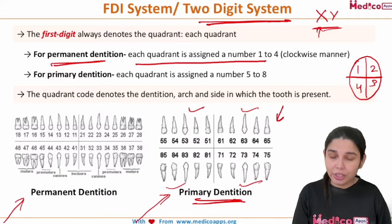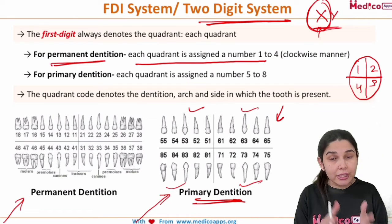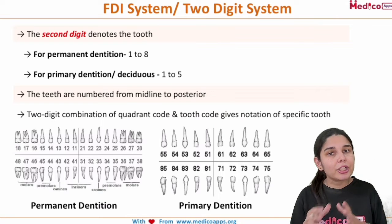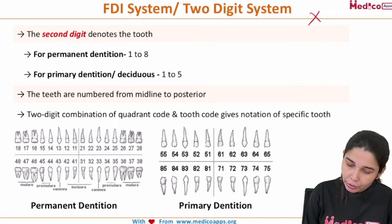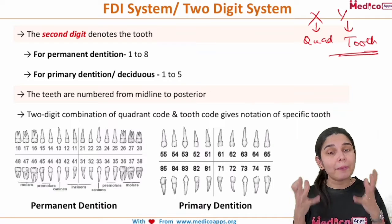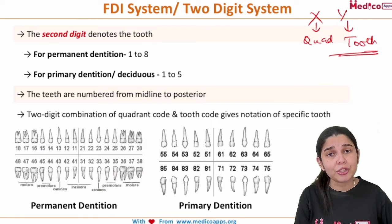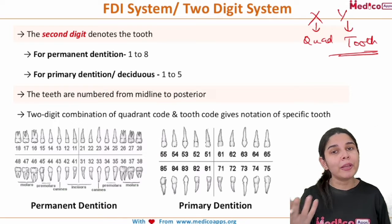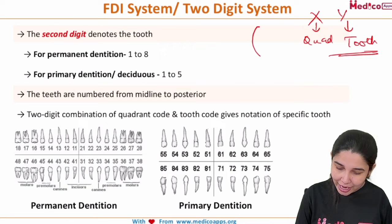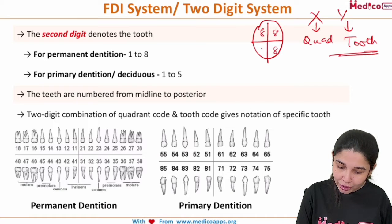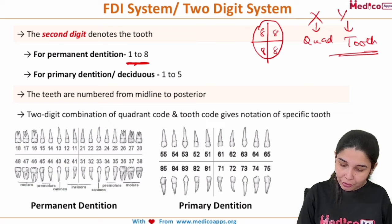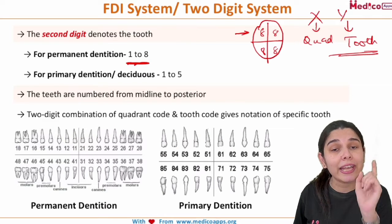The second digit denotes the tooth. In an adult patient there are 32 teeth. Dividing by 4 quadrants gives 8 teeth per quadrant. So the second digit for permanent dentition runs from 1 to 8, starting from the central incisor at the midline and going back to the third molar. The oral cavity is divided using the midline — splitting right and left — and the occlusal plane separating maxillary and mandibular.